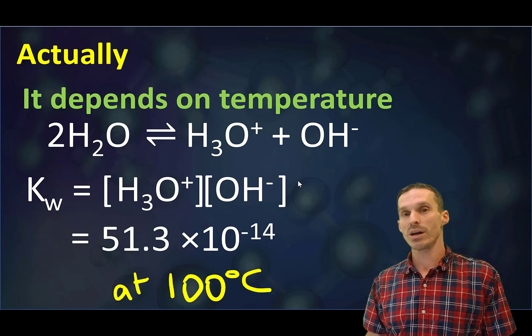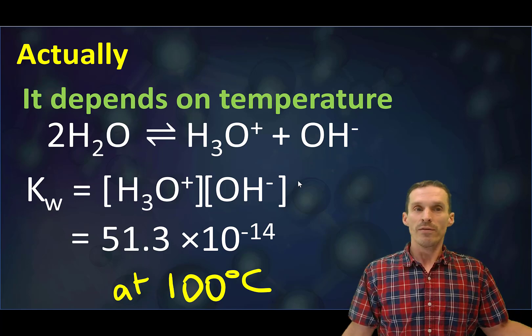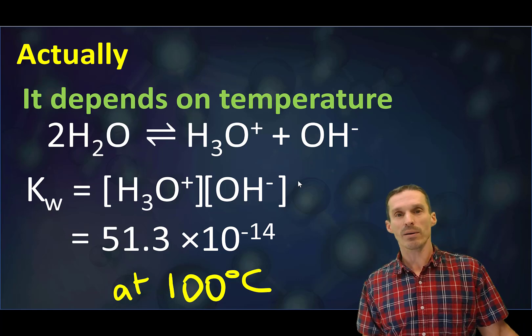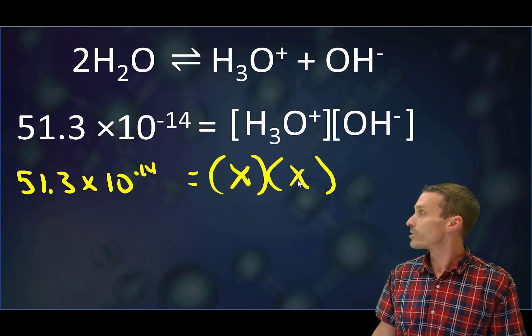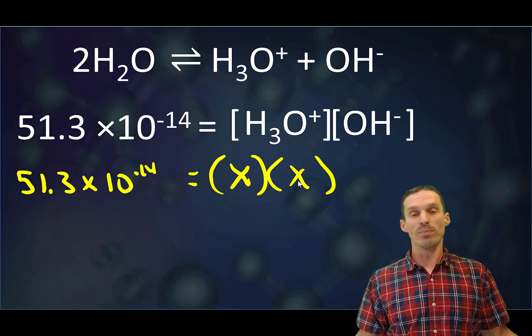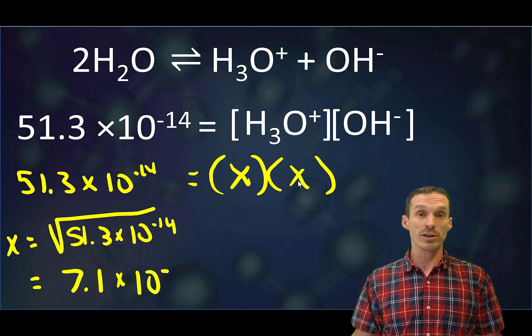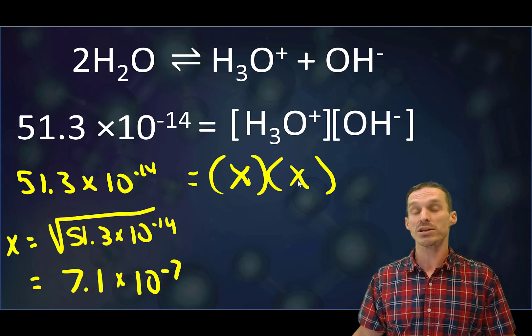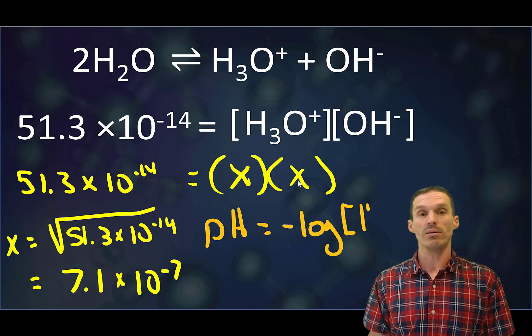But the Kw changes. If we look at boiling water here, we see the Kw goes up, 51 times 10 to the minus 14. Doesn't seem like much of a big difference, but if we take that number and we solve for the concentration of H plus, we know H plus and OH are equal, so they both equal x, and we just have to take the square root of the Kw. That's strictly speaking what the pH of a neutral solvent would be: square root of Kw.